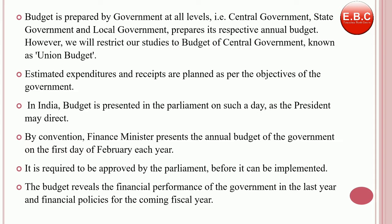Our discussion will be restricted to the union budget. Under the union budget, there are estimated expenditure and receipts which are considered to be planned expenditure. It is prepared by the government as per their objectives. In India, the budget is presented in the parliament on such a day as the president may direct. By convention, the finance minister presents the annual budget on the 1st day of February each year. It is required to be approved by the parliament before it can be implemented. The budget shows the financial performance of the government in the last year and the financial policies for the upcoming financial year.